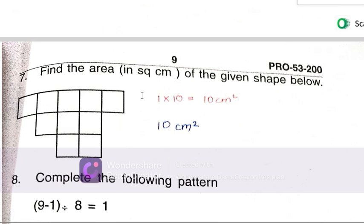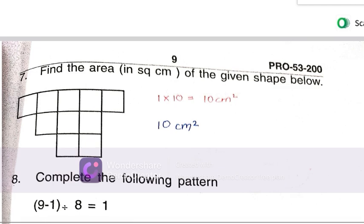Find the area in square cm. One area is 1, so the total is 1, 2, 3, 4, 5, 6, 7, 8, 9, 10. So 10 areas of 1 into 10 which means 10 square cm.